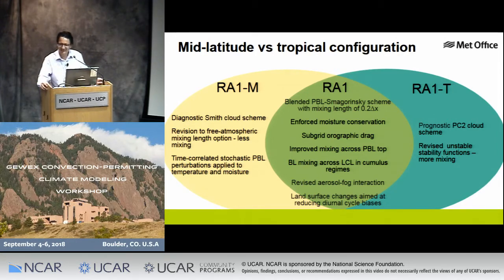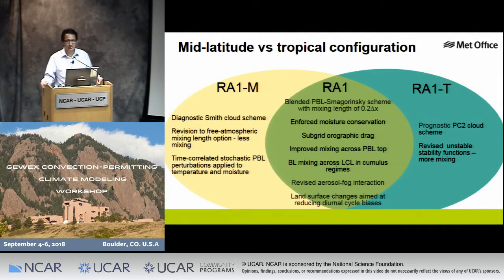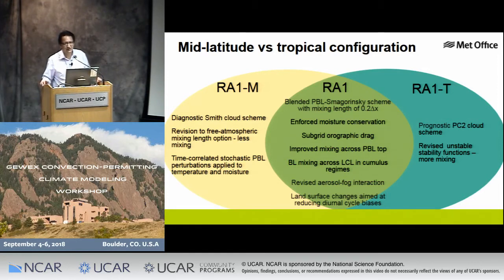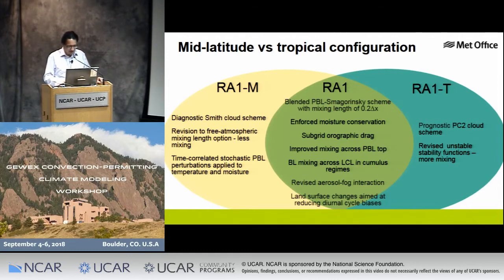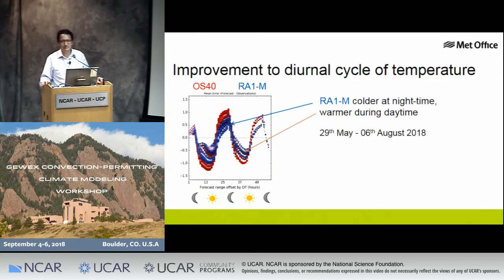Boundary layer mixing is important for the representation of stratocumulus and showers. We've experimented extensively with boundary layer mixing details to get both good stratocumulus and good shower forecasts — but it's proved almost impossible to satisfy all demands simultaneously. We find that in terms of convection initiation, we tend to initiate convection too late over the UK but too early in the tropics. This is one area of work addressed by our Convection Process Evaluation Group, with collaborators from all partner countries examining themes such as the diurnal cycle, triggering, and cell structure.